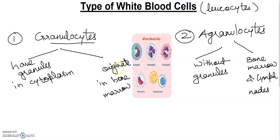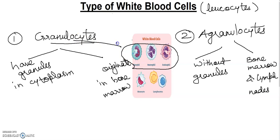Now we will talk about granulocytes. There are three types: basophil, neutrophil, and eosinophil. These three are the granulocytes, types one, two, and three.